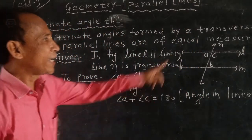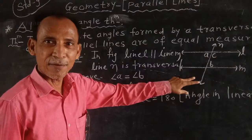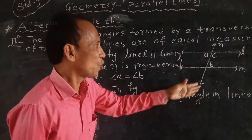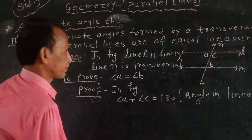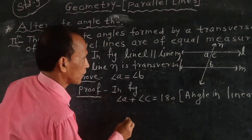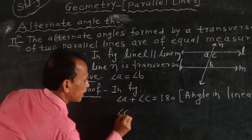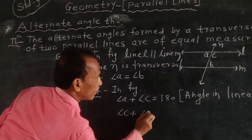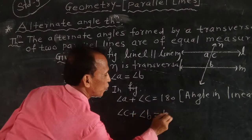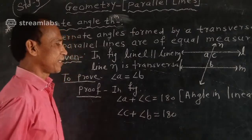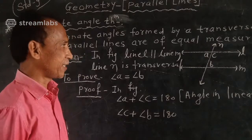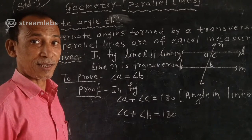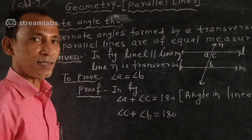Now, line M and line L — with L as the transversal. So angle C plus angle B is equal to 180 degrees, because of the pair of interior angles. Last time we discussed the interior angle theorem.